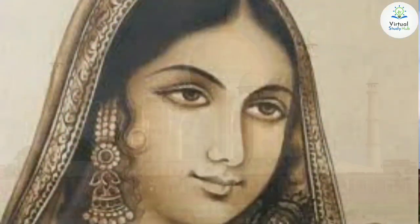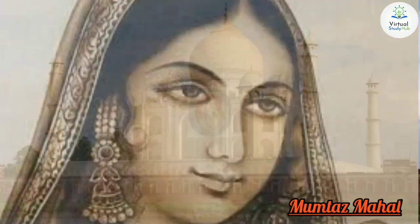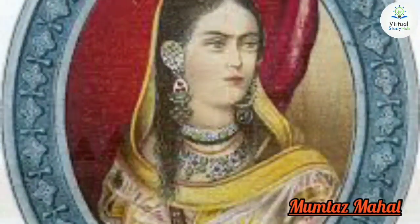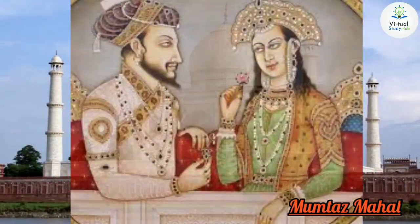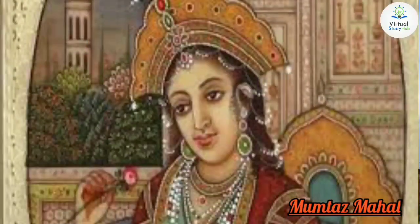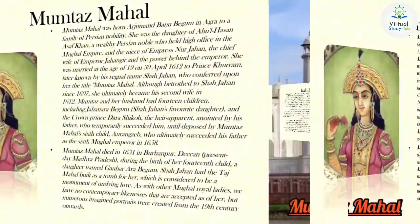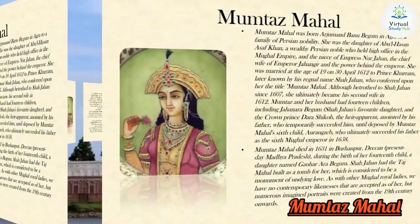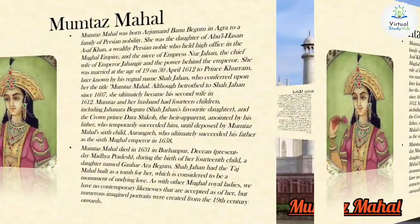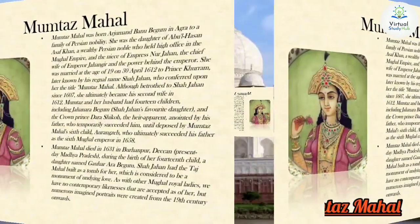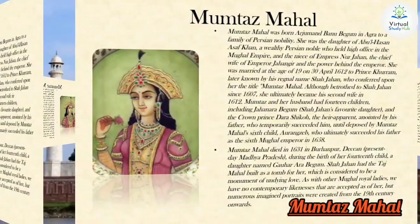Now let's get to know the person for whom this spectacular tomb was made — Mumtaz Mahal. Mumtaz Mahal was born Arjumand Banu Begum in Agra, into a family of Persian nobility. She was the daughter of Abul Hasan Asaf Khan, a wealthy Persian noble who held high office in the Mughal Empire, and the niece of Empress Nur Jahan, the chief wife of Emperor Jahangir. She married on 10 May 1612 Prince Khurram, later known by his regal name Shah Jahan, who conferred upon her the title Mumtaz Mahal.